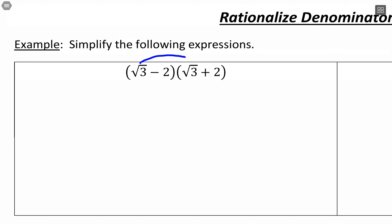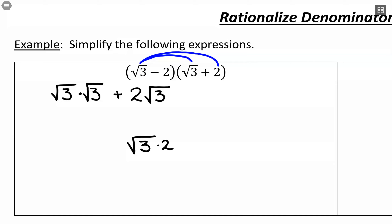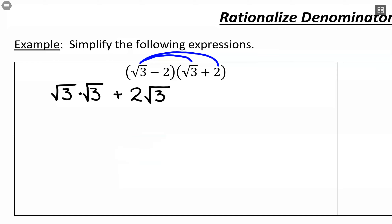Let's start multiplying the first terms: square root of 3 times square root of 3. Then the outer term: square root of 3 times positive 2, which I'll write as positive 2 times the square root of 3. If we write the number not under the radical out front, it's clearer whether the number is under the radical or not. Then inner: negative 2 times the square root of 3. And then last: negative 2 times positive 2.